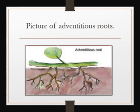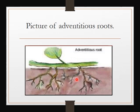That is a picture of adventitious roots. As you can see, this is a stem which fell on the ground, and when it fell on the ground, roots began to come from it. So those roots that are produced from a non-root portion of the plant are the ones we call adventitious roots.